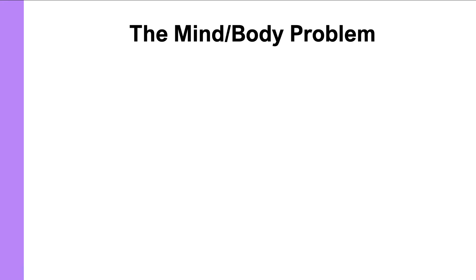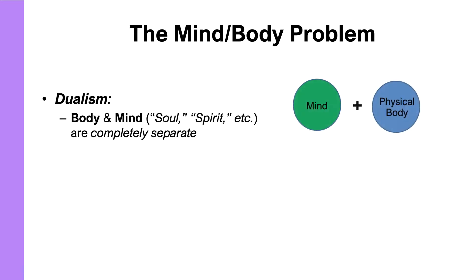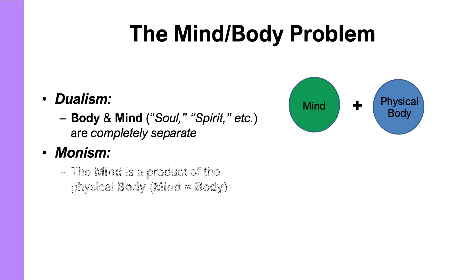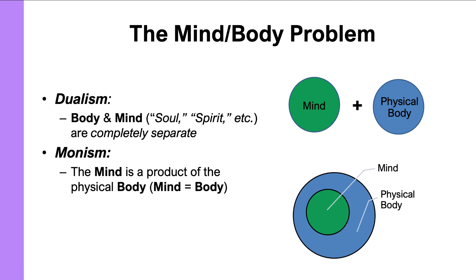The mind-body problem essentially has two sides. There is dualism — the belief that your body and your mind are completely separate entities. You have a physical body and a mind or soul or spirit that is not physical and not a product of the body. The other view is monism — the idea that your body and your mind are essentially the same thing, both made of matter and energy, and your mind or soul is a product of the functioning of neurons firing in your brain.